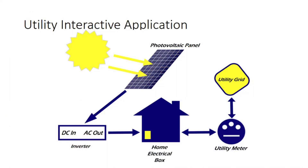In utility-interactive, or grid-connected, PV systems, PV modules are connected to inverters that convert the DC produced by the PV modules to AC. This electricity can then power household appliances or can be sold directly to the grid. As a building receives this energy, it is distributed to appliances and lighting, or other devices where needed.